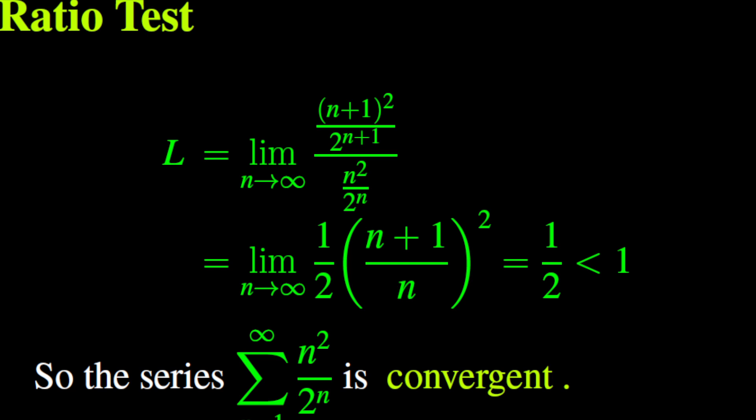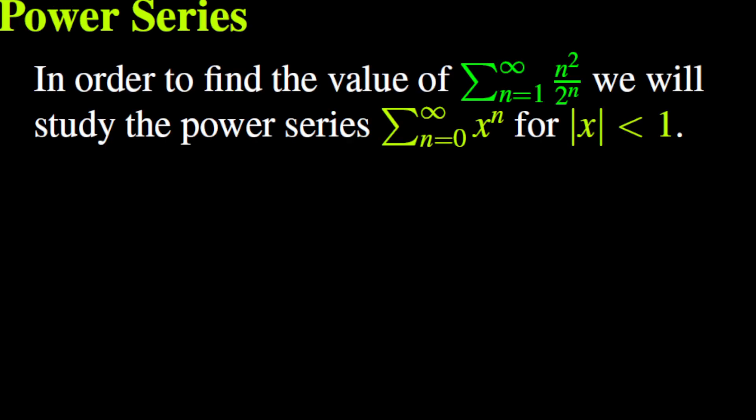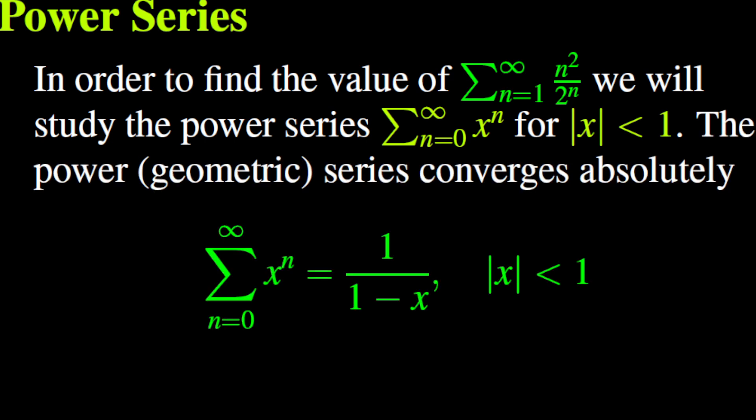Please do not forget to like the video and subscribe to our channel. Thanks to all those who have already done so. Now that we know that the series n squared over 2 to the power n is convergent, let us compute its sum. To find its sum, we will study the geometric power series x to the power n for |x| less than 1. The geometric power series is absolutely convergent for all x strictly between negative 1 and 1, and the sum of x to the power n for n from 0 to infinity is the function 1 over 1 minus x.